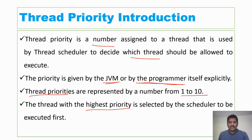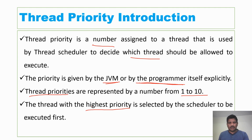For example, if both threads have the same priority, how will the threads go for execution? It depends on first come first serve — whichever thread entered first, that thread will go for execution.